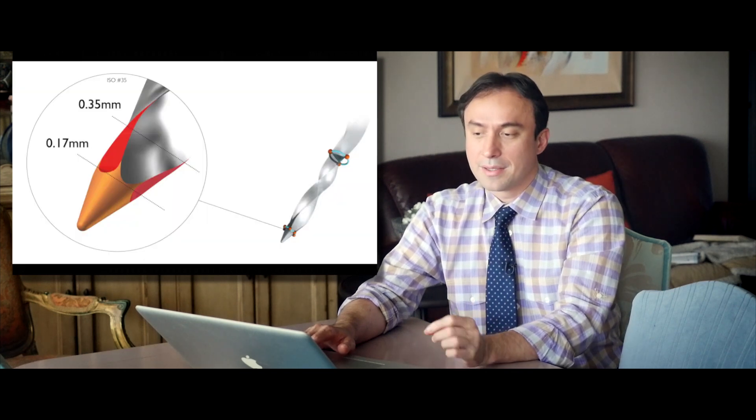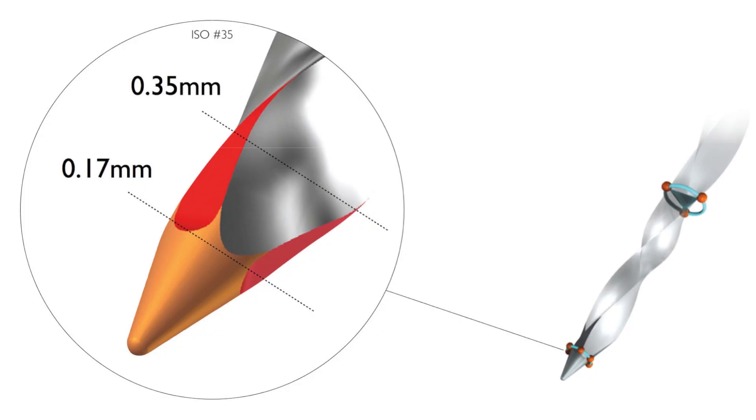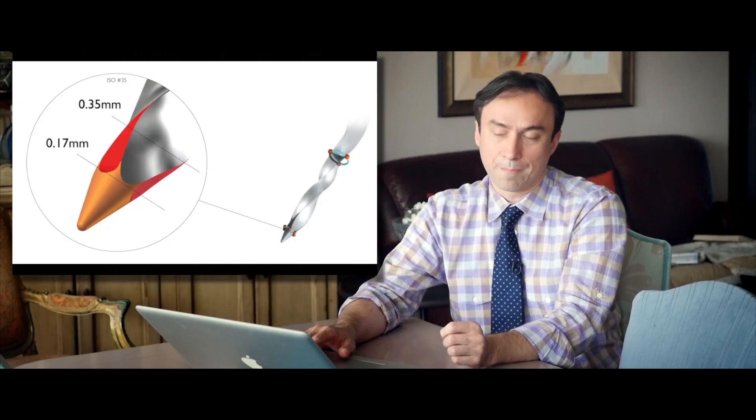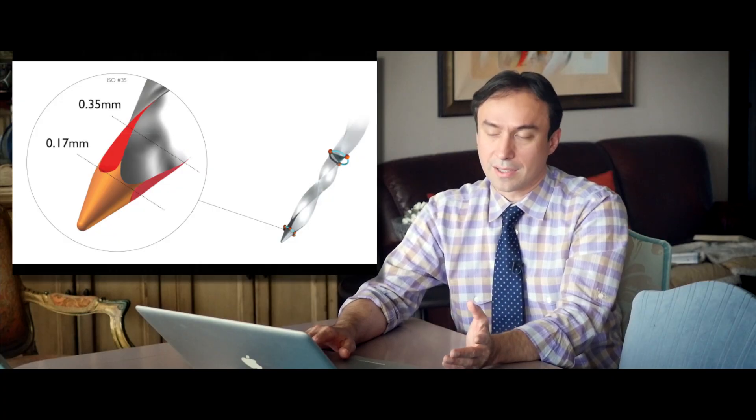So that basically is the booster tip, and you can see here this is only a very small area at the tip of the file that has been shaved off and flattened. This does help guide the tip down the canal and also reduces the incidence of ledging.